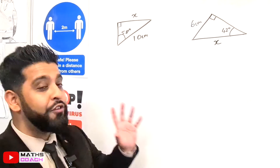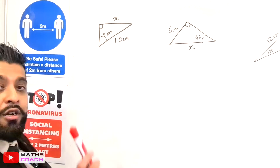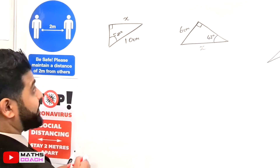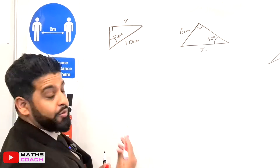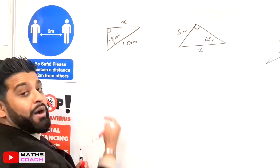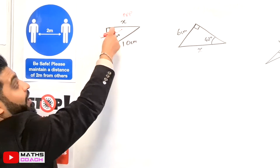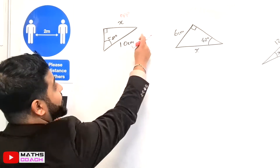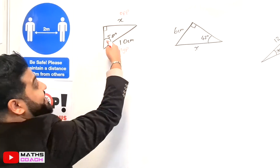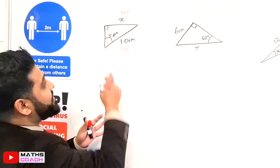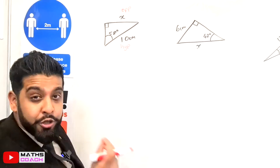We are going to look at three different examples exploring SOH CAH TOA. For the first triangle, step one is to label it - it's very important to get the labeling correct. The side x that we are looking for is opposite our angle, so we call it 'op'. The longest side, 10 centimeters, is opposite the right angle so it's the hypotenuse, which we call 'hyp'. Just for practice, the remaining side is adjacent to our angle.